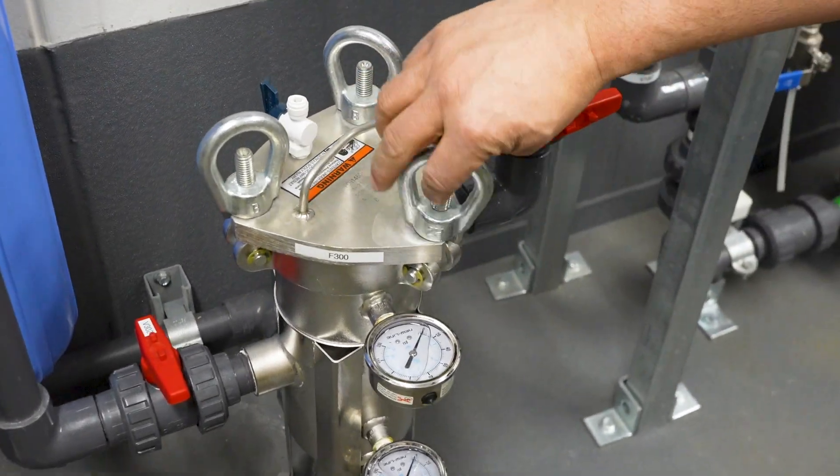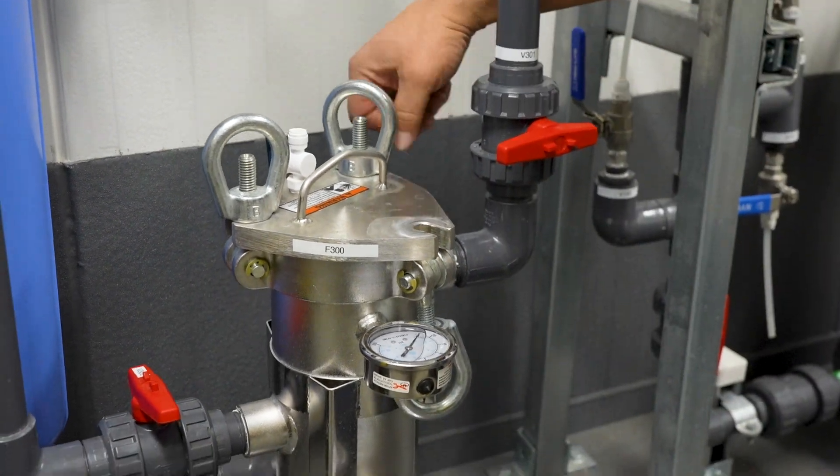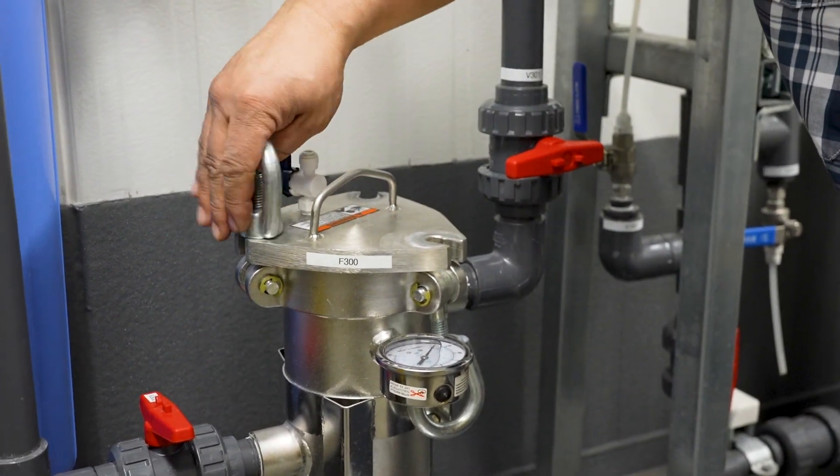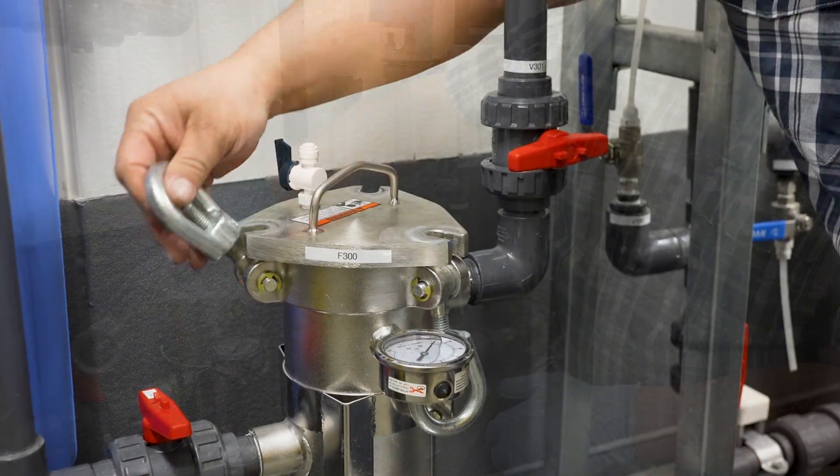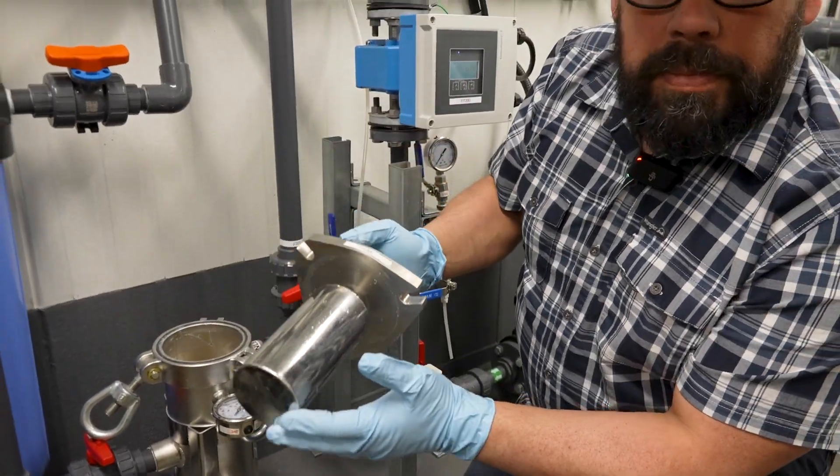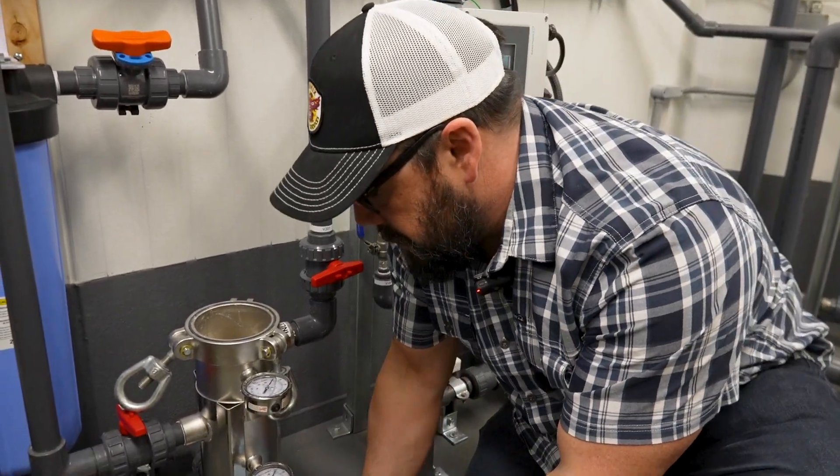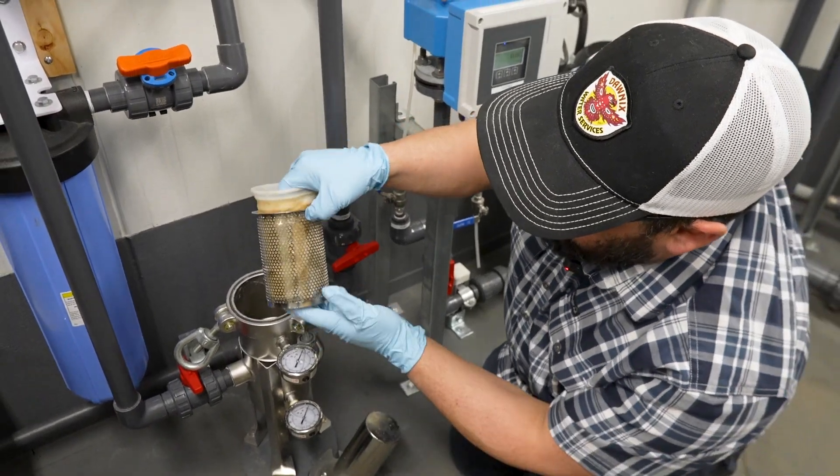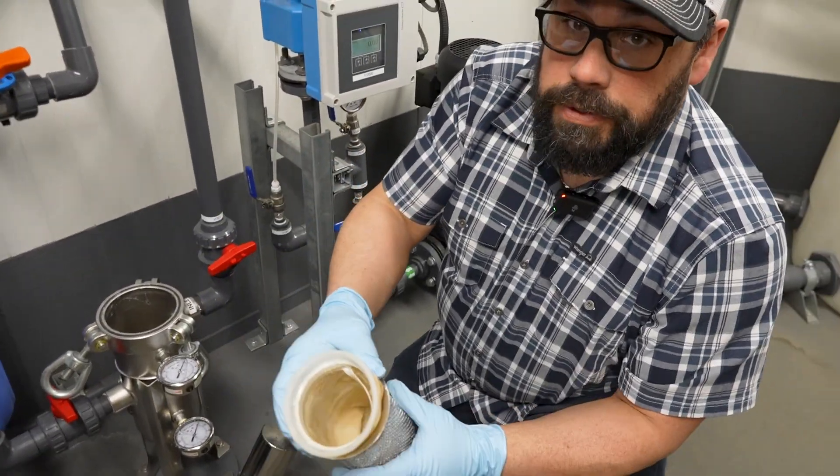Then you begin by removing the wing nuts off the top. Then we pull this out and you got your weight in there to keep your filter in place, and then inside you have a screen with your bag filter inside of it.